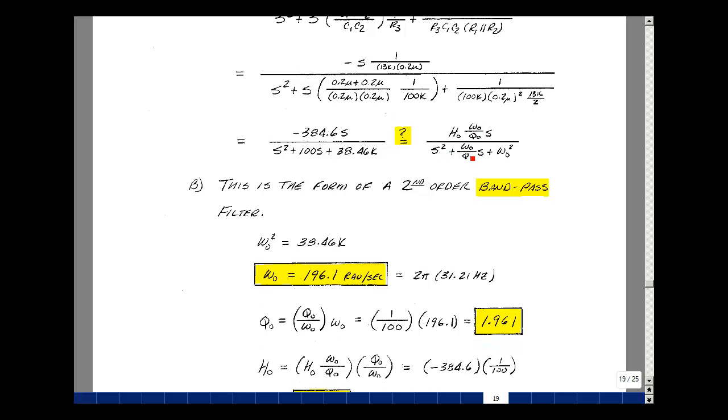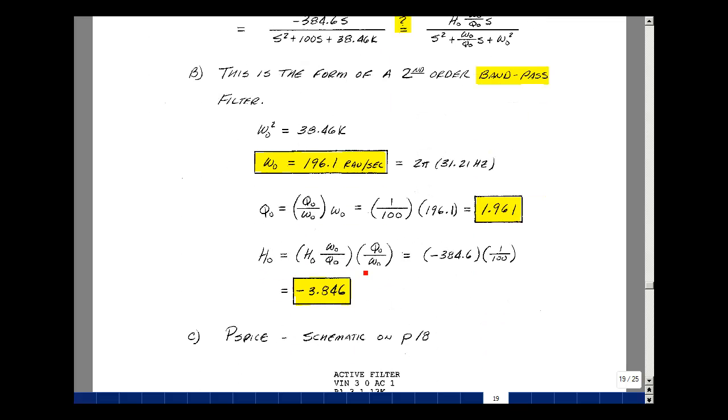And lastly, in the numerator, I have H naught omega naught over Q naught, and that's equal to minus 384.6, and then multiplying that by Q naught over omega naught, I can then get the value of H naught. So multiplying that by 1 over 100, I get a minus 3.846.